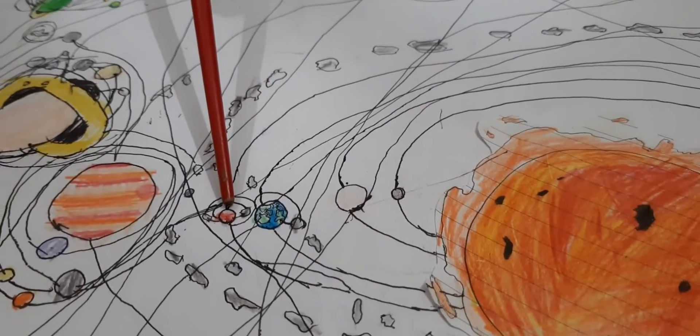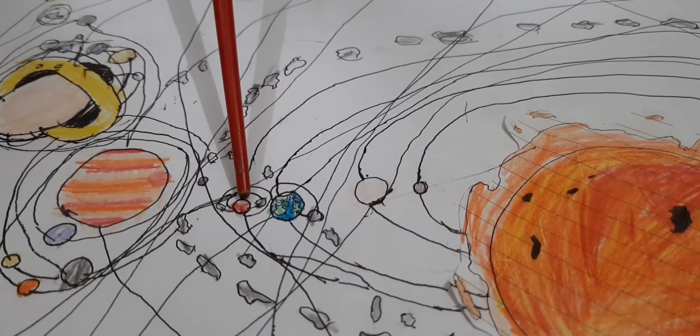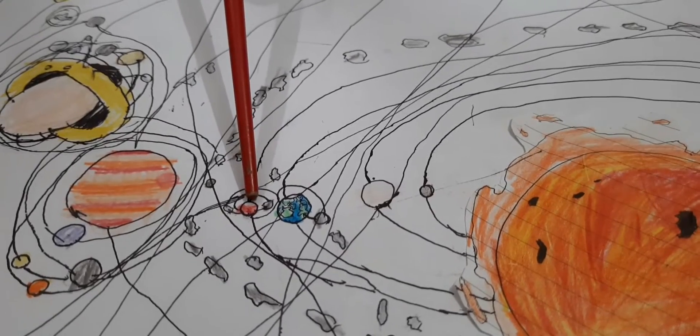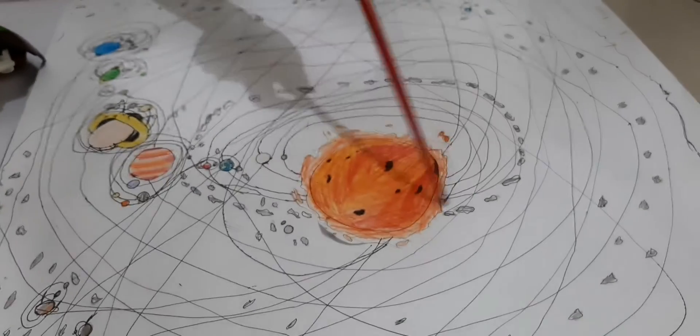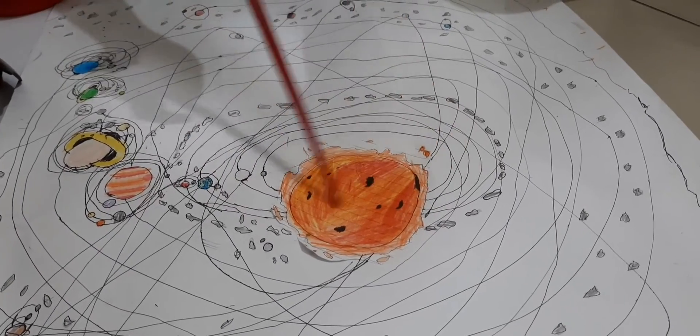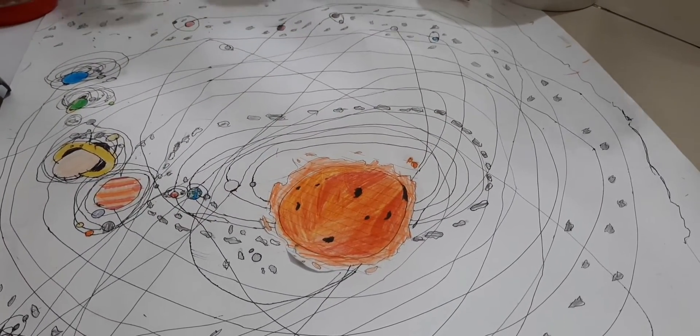Here's Mars. It's the fourth planet. Here's the asteroid belt for huge rocks called asteroids.